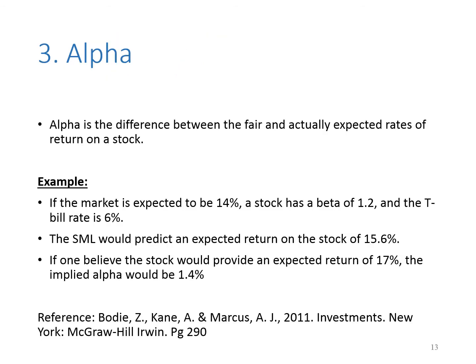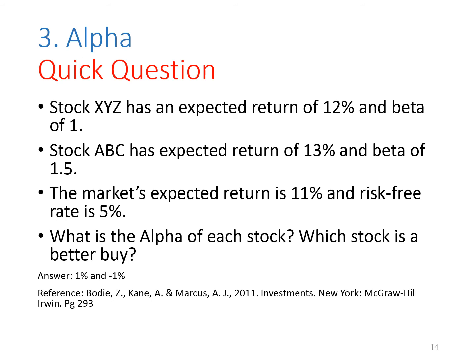Alpha is the difference between the fair and actually expected risk of return on a stock. Estimation of alpha must be made relative to a benchmark portfolio. Alpha is used to signify the amount of annual return on the portfolio that cannot be tied to the volatility in the overall market. According to CAPM, if the required rate of return for stock XYZ is 11% and its actual return is 12%, alpha for stock XYZ is 12% − 11% = 1%. For stock ABC, if the required return is 14% and actual return is 13%, the alpha is 13% − 14% = −1%.